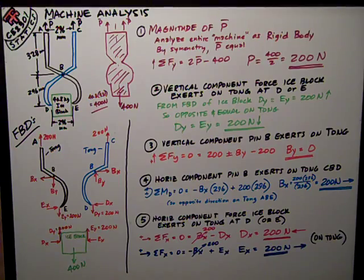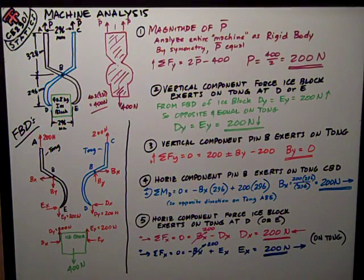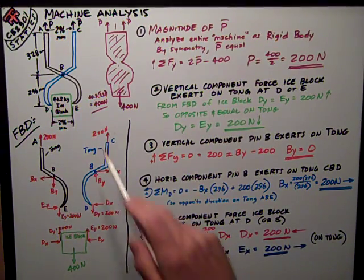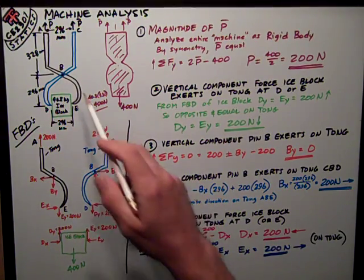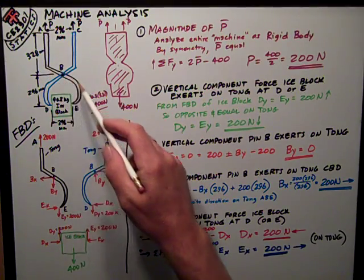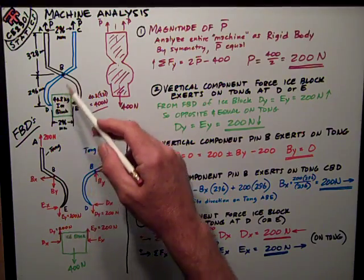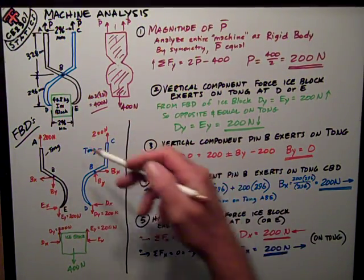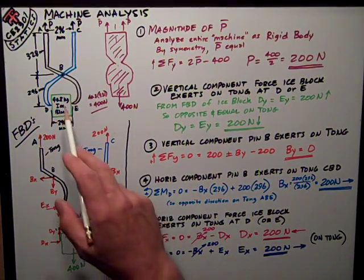The third problem was a machine analysis problem, which is an ice tongs. The setup consists of two members, ABE and CBD, that pinch together and hold up this ice block down here that I've got drawn in green.